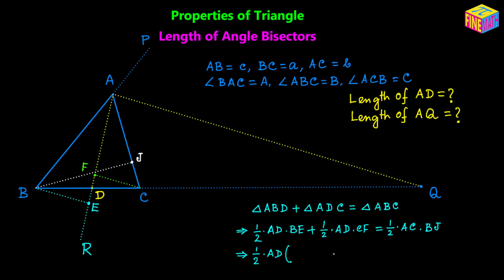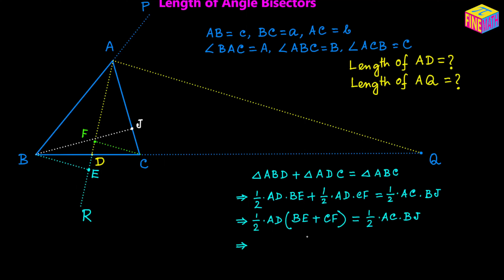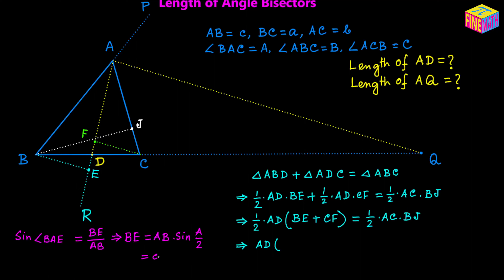On the left-hand side, half times AD is a common factor. Taking that out, we have half times AD times (BE + CF) equals half times AC times BJ. Multiplying both sides by 2: AD times (BE + CF) = AC times BJ. Now, in right triangle ABE, sine of angle BAE equals BE over AB, so BE = AB times sine(BAE). Since AD is the angle bisector, angle BAE = A/2, and AB = c, so BE = c·sin(A/2).